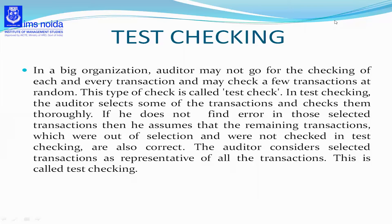The technique of test checking is applied by the auditor by selecting transactions on a random basis. He does not follow any specific, prescribed, or standard method of selection. This process is always employed in the case of big business houses or manufacturing concerns where the number of transactions is very huge. If he does not find errors in those selected transactions, the auditor will assume that the remaining unchecked transactions are also correct.